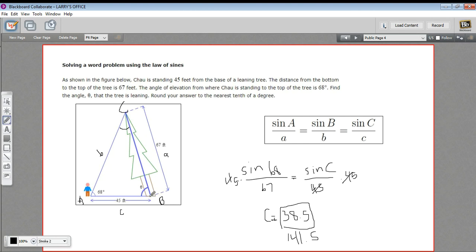And now to find theta, all we have to do is take 180 minus 68. So let me punch that in. 180 minus 68 minus 38.5. And theta should be 73.5 degrees. So that is how to use the law of sines to solve a word problem.